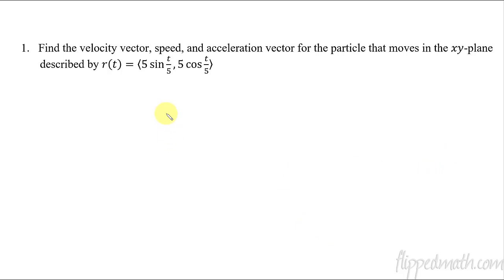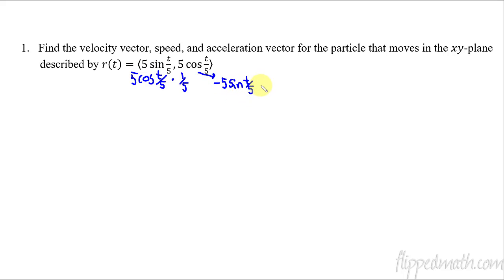Let's put this into practice. For this first problem, we're going to find the velocity vector, the speed, and the acceleration vector. Notice again, speed is not a vector. We've got a particle moving in the xy-plane described by a given position function. Taking the first derivative: the derivative gives us 5 cosine of t/5, and we multiply by the derivative of the inside, which is 1/5. So the 1/5 and the 5 cancel, giving us cosine(t/5) for the x component and negative sine(t/5) for the y component. That's our velocity vector.